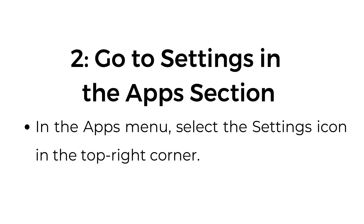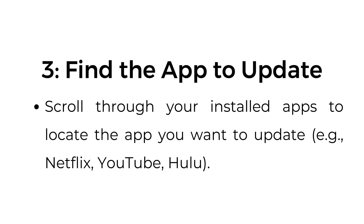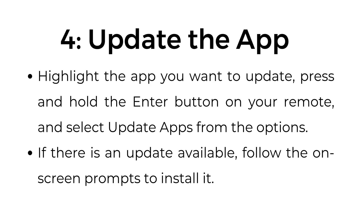Step 2: Go to Settings in the Apps section — in the Apps menu, select the Settings icon in the top right corner. Step 3: Find the app to update — scroll through your installed apps to locate the app you want to update, such as Netflix, YouTube, or Hulu.